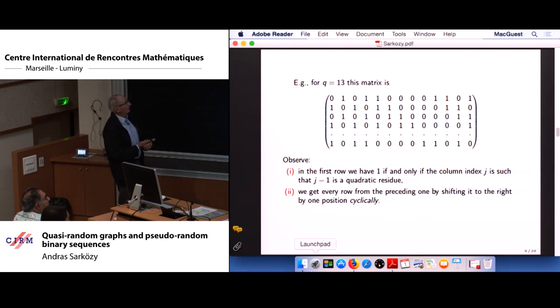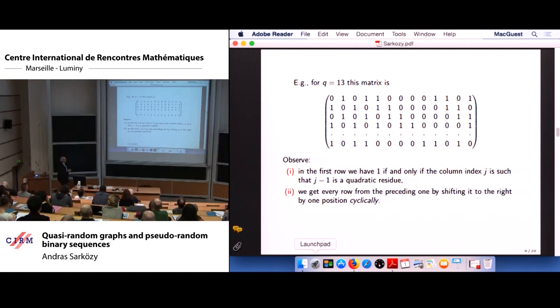Now, we said that the Paley graph is a quasi-random graph. It means that its adjacency matrix must be symmetric anyway. And the symmetric property holds by the reason that Q is of the form 4K plus 1. This means the distribution of the Legendre symbol from 1 over Q to Q minus 1 over Q is symmetric. For example, if Q is equal to 13, then this matrix looks like the one above. And we may observe that it has two important properties.